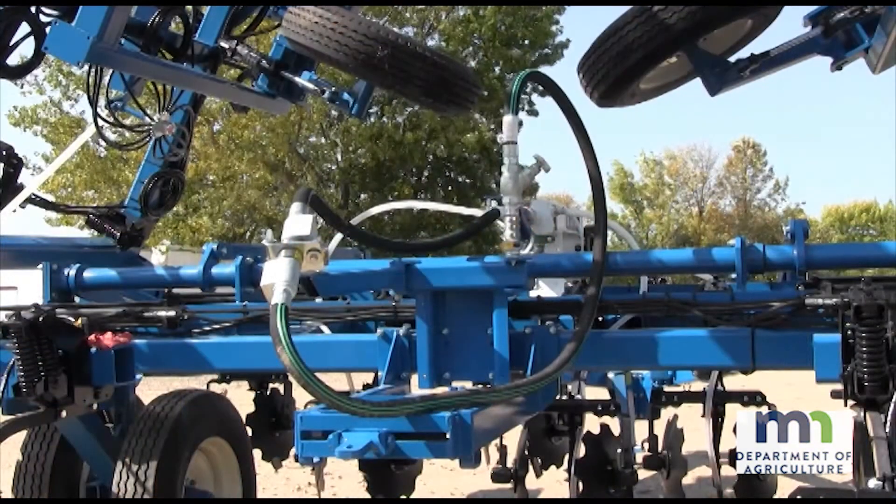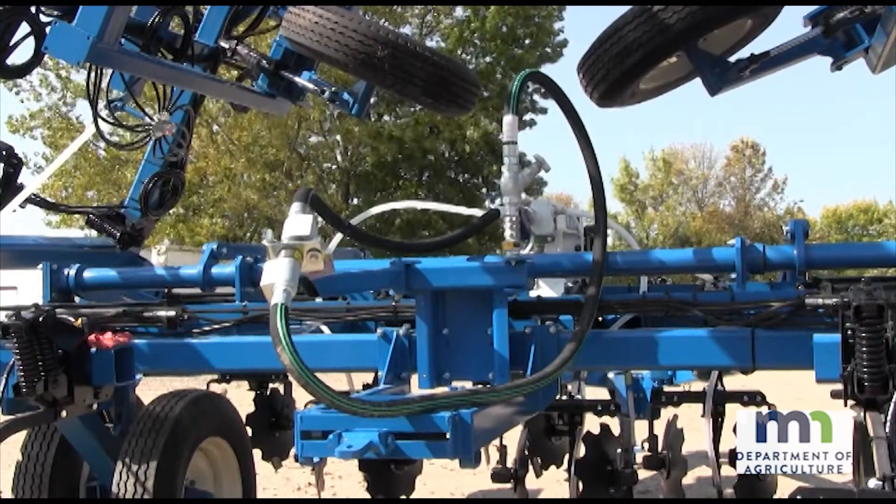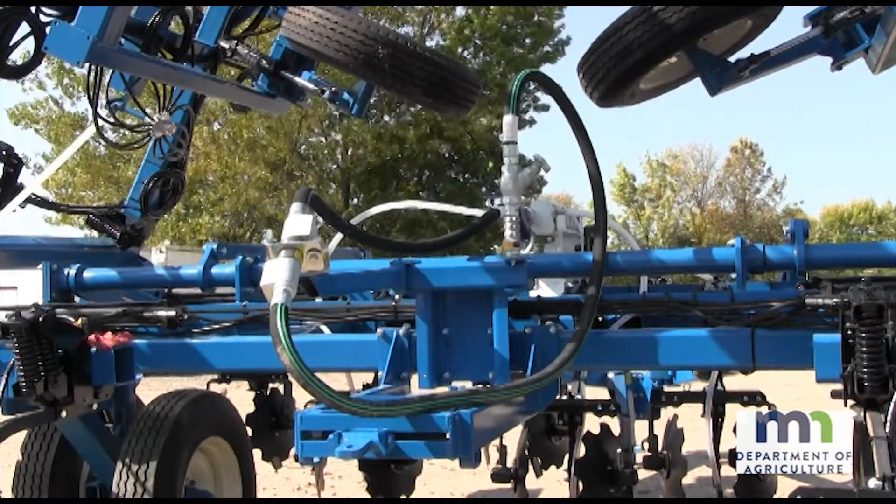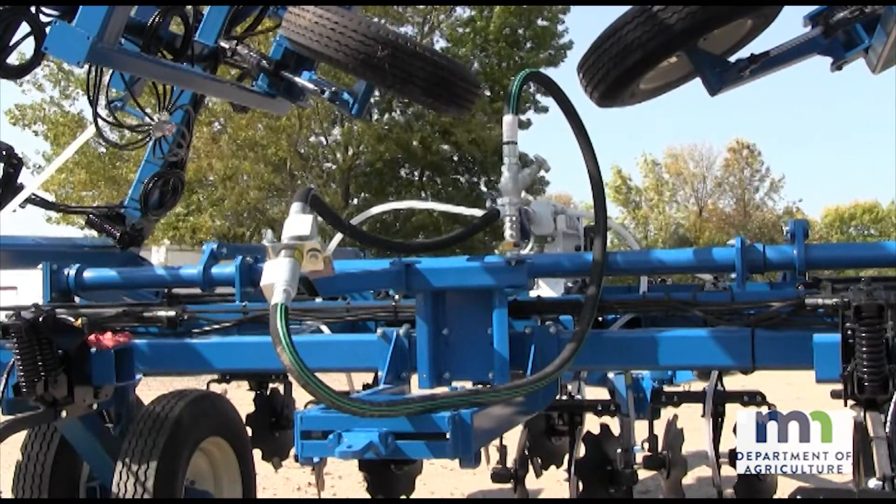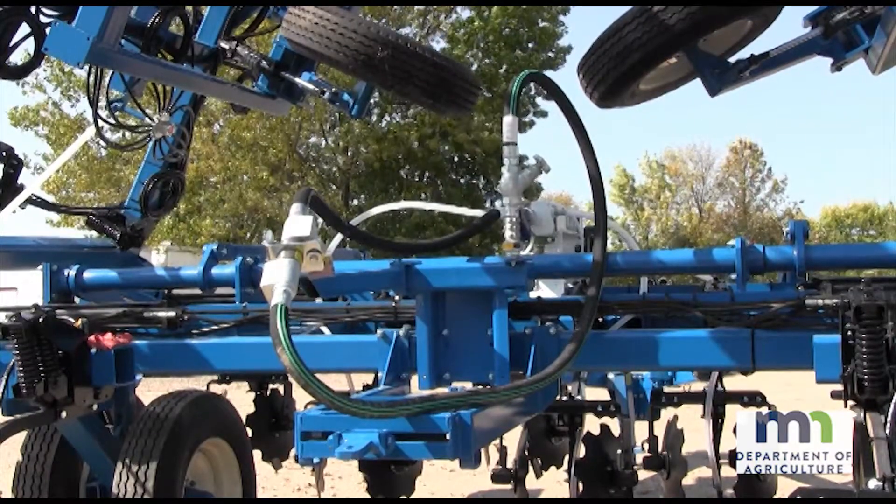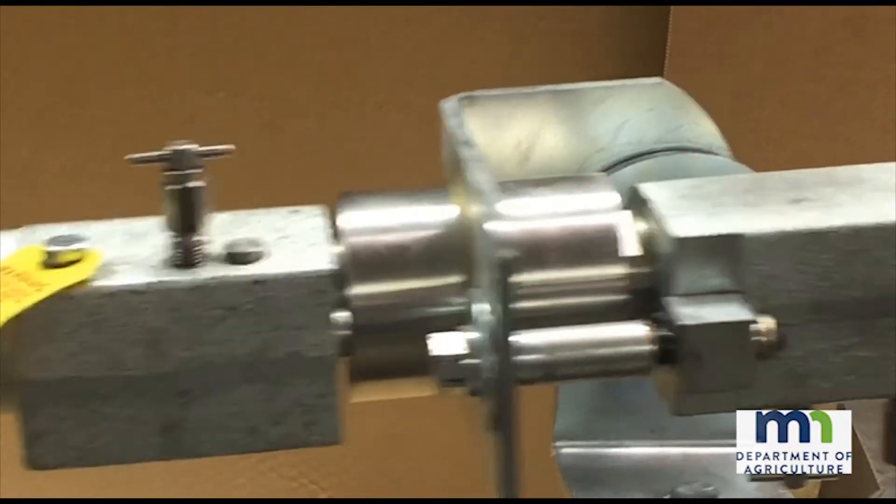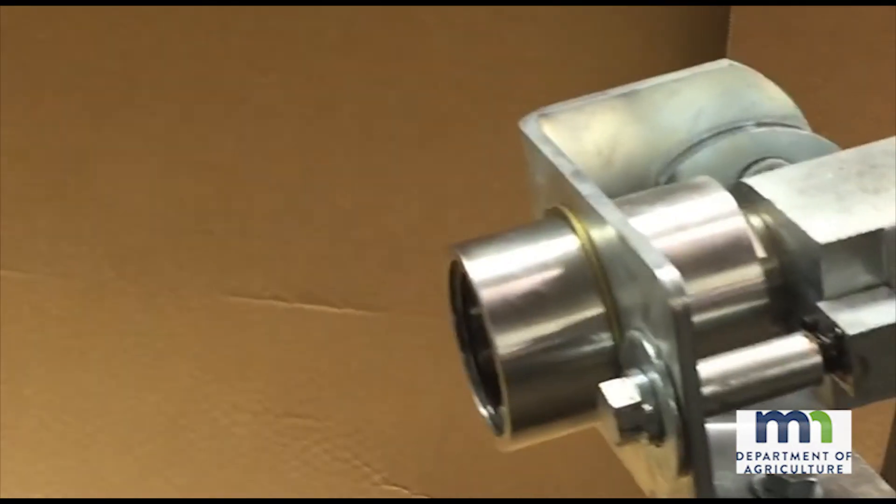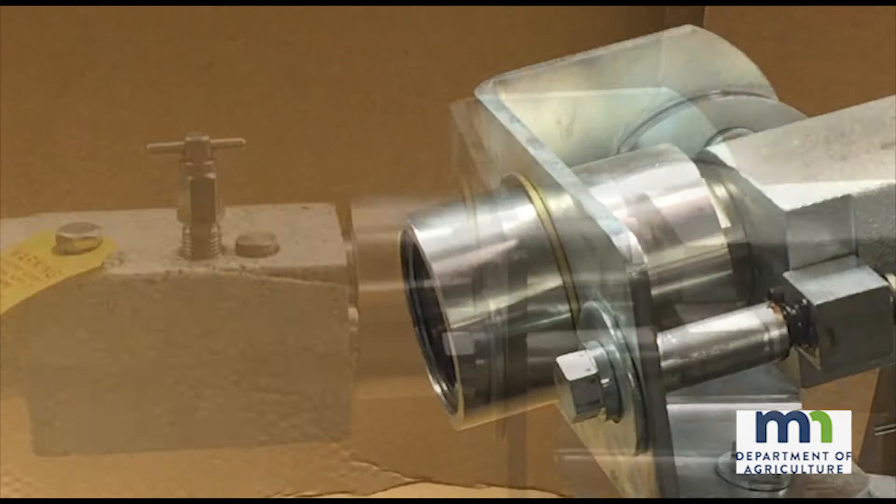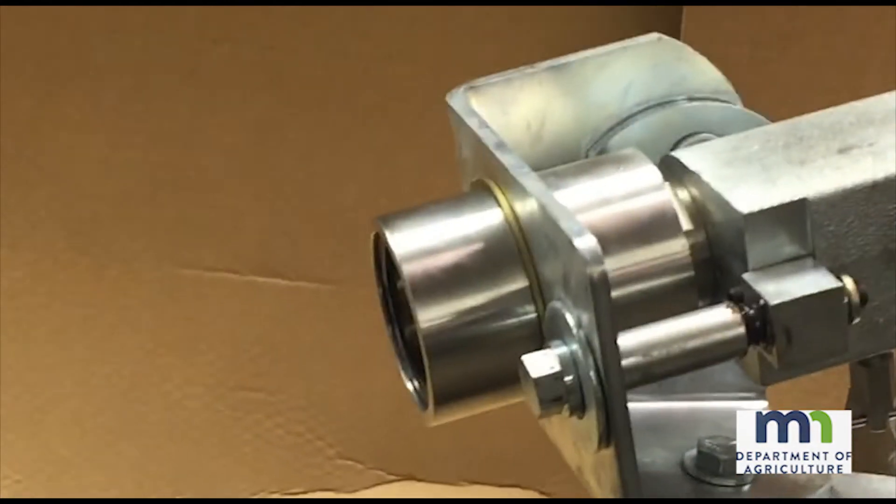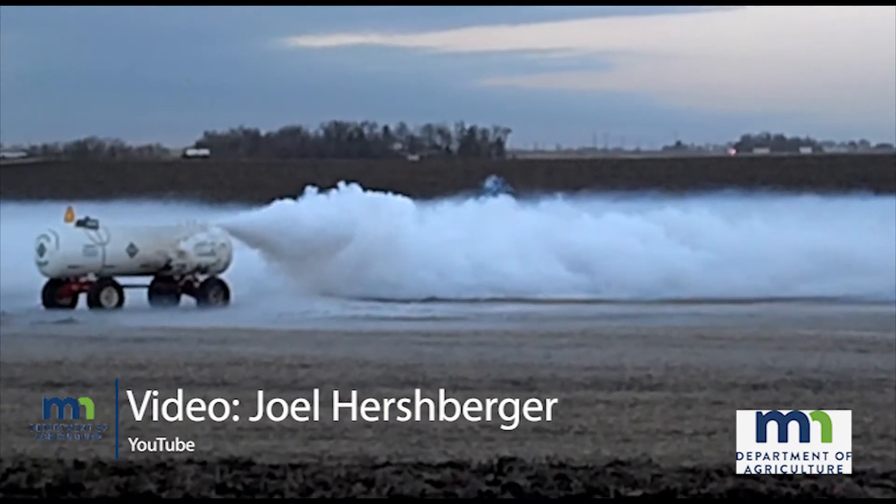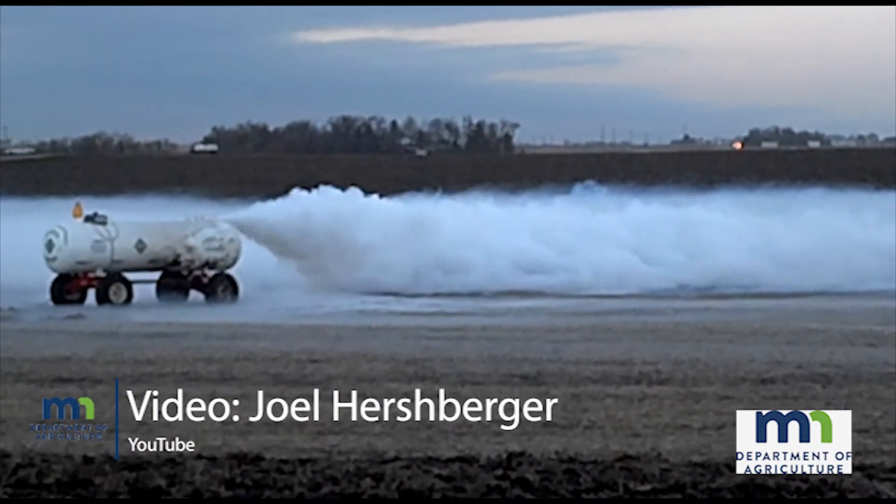The breakaway coupling device, or what is often referred to as the quick coupler or pull-away coupler, is a required safety device that must be installed on an ammonia application unit. The two segments or halves of the breakaway coupling device separate, stopping the flow in the event of a separation between the application unit and nurse tank. Without an operable breakaway coupling device, an uncontrolled ammonia release is likely.